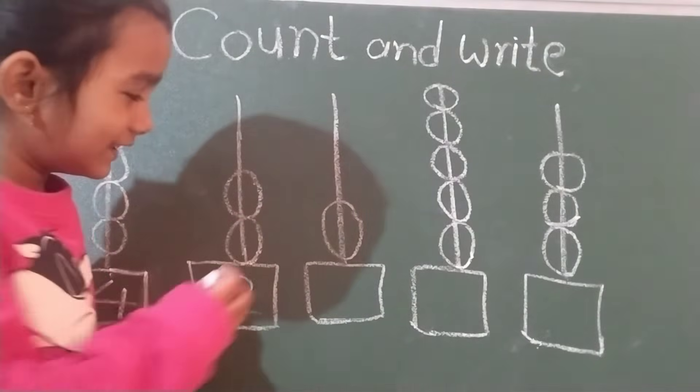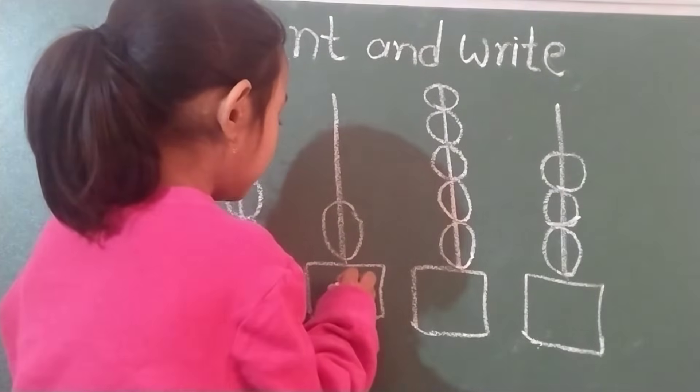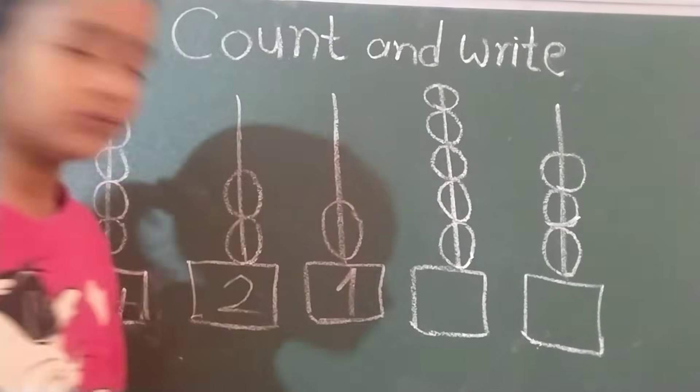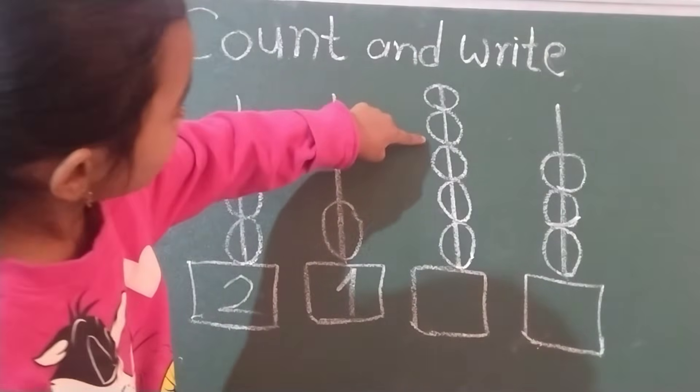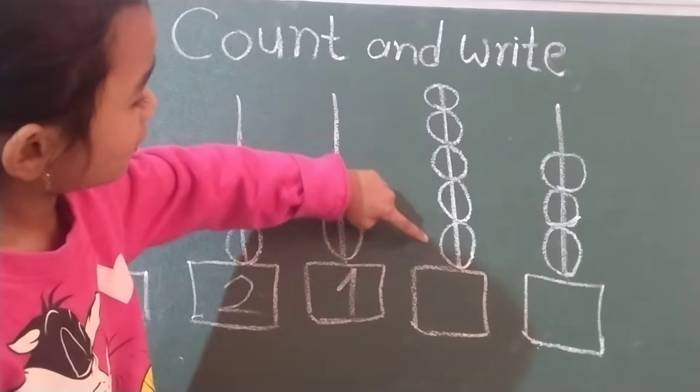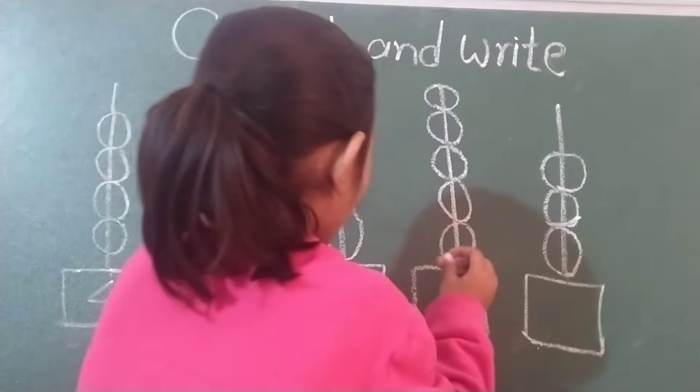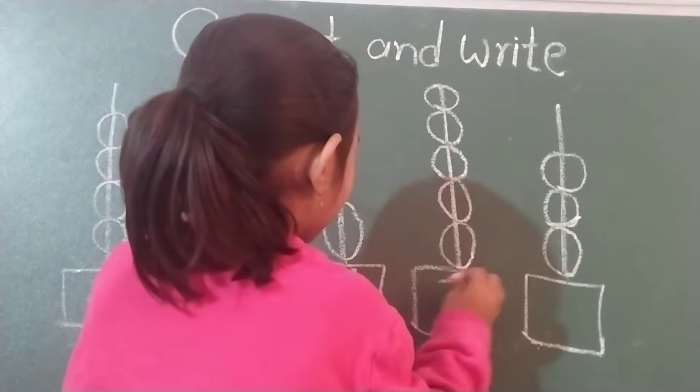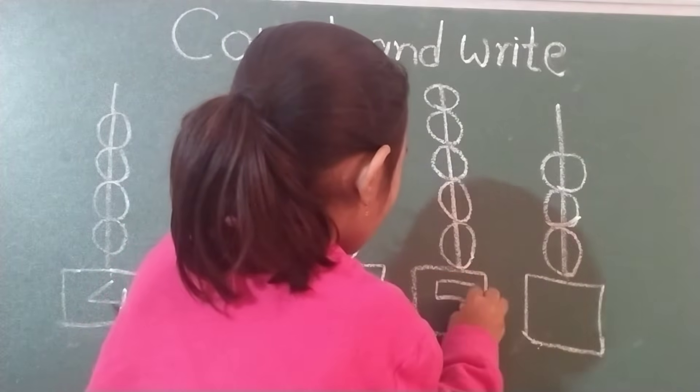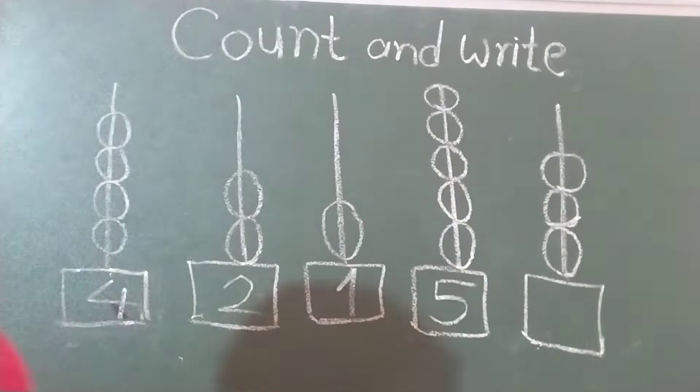Next. One. Very good. Then? One, two, three, four, five. Then which number? How to write five? Five. Very good.